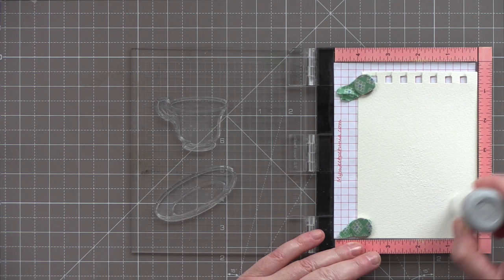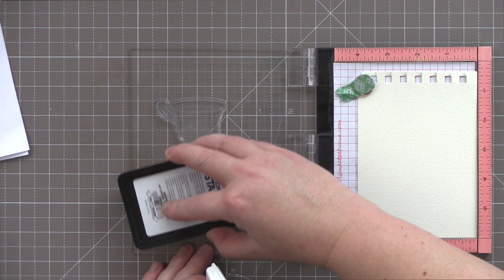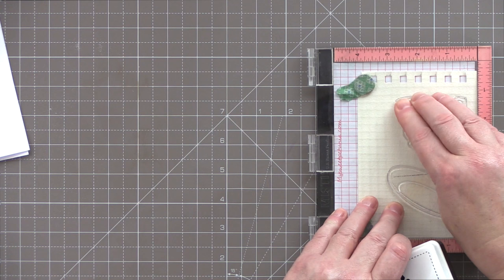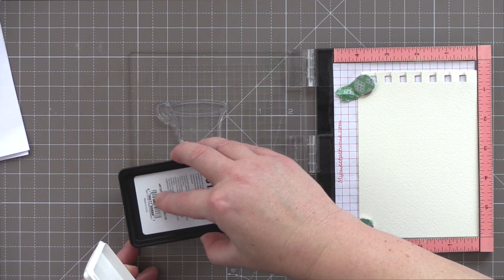I've placed the teacup and the saucer on the door of the Mini MISTI and I've got a piece of Saunders Waterford Cold Press watercolor card in the MISTI. I've treated that with EK Success Powder Tool because I'm going to heat emboss and the powder tool will prevent embossing powder sticking where you don't want it to.